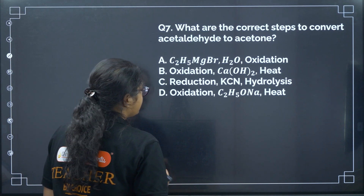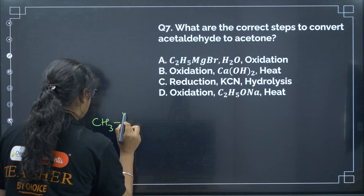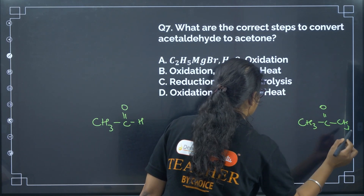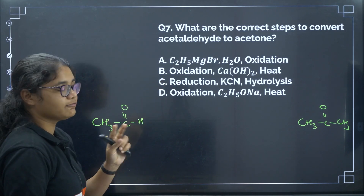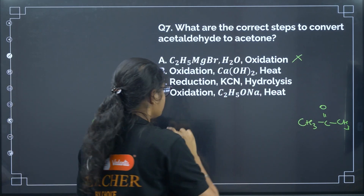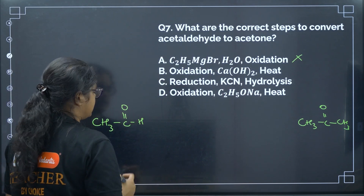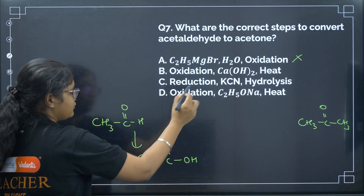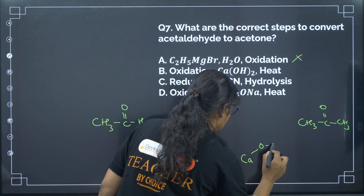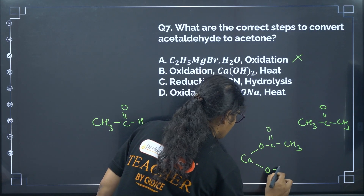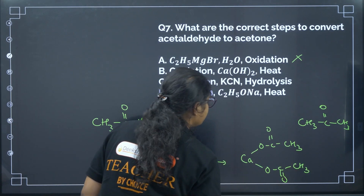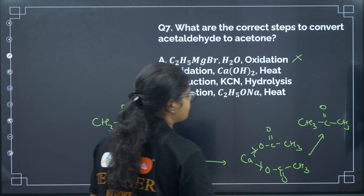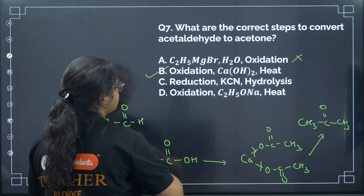Next: what are the correct steps to convert acetaldehyde to acetone? The number of carbons increases by one. Adding C2H5MgBr gives 4 carbons — too many. Instead: oxidize acetaldehyde to CH3COOH, treat with calcium hydroxide to form the calcium salt (Ca(OCOCH3)2), then heat it. The C-Ca bonds break and we get acetone as the product. Correct answer: option B.